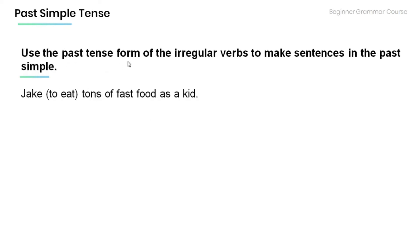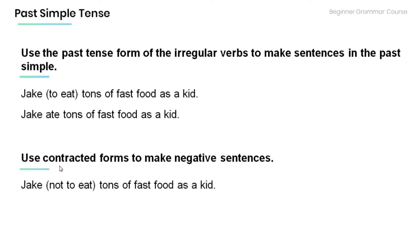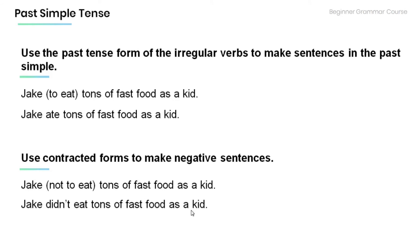Note that we use the past tense form of irregular verbs to make sentences in the past simple. Read the following sentence and change the irregular verb into the past simple: 'Jake [to eat] tons of fast food as a kid.' Answer: 'Jake ate tons of fast food as a kid.' Negative: 'Jake didn't eat tons of fast food as a kid.'